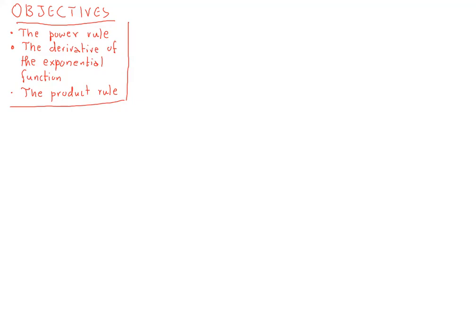Let's begin with some very elementary rules that we have already mentioned, but it would be very important to make them as explicit as possible. When we have two functions and we take their sum, the derivative of the sum is the sum of the derivatives. We have seen this and used it a lot when talking about derivatives of polynomials. Also, the derivative of a constant multiple of a function is that constant times the derivative of the function. These two basic rules allow us to break down finding the derivative into the summands of the expression we have.